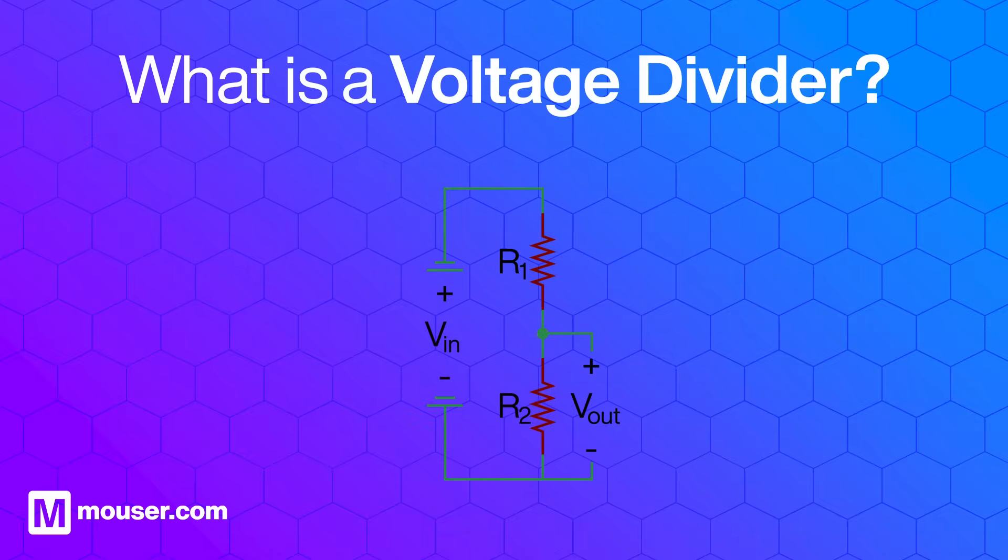A voltage divider is a fundamental building block in electronics. This rudimentary but useful circuit divides a larger input voltage into a smaller output voltage using only resistors.